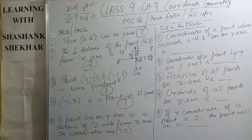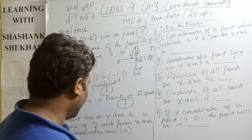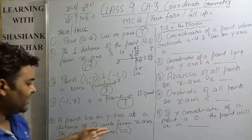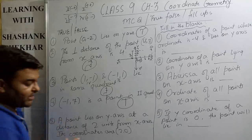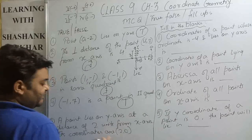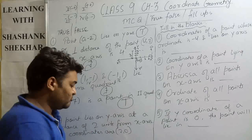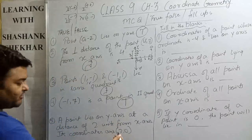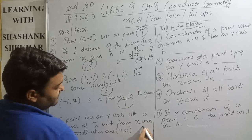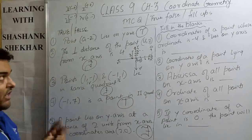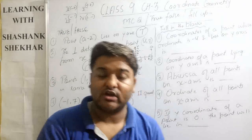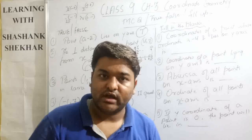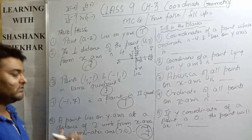True/False question five: a point lies on the y-axis at a distance of two units from the x-axis; its coordinates are (2, 0). If a point lies on the y-axis, then x must be equal to 0. So the coordinates should be (0, 2), not (2, 0). This statement is False.